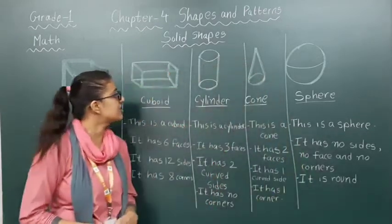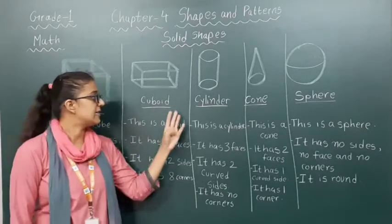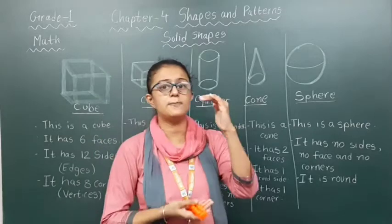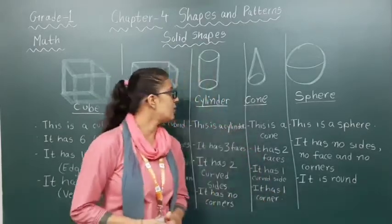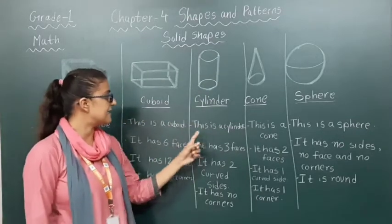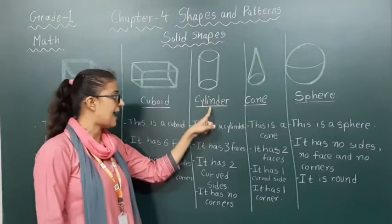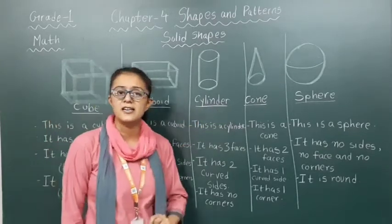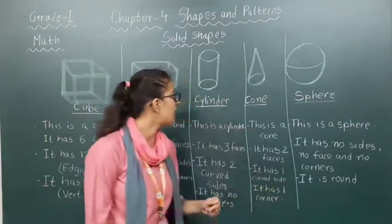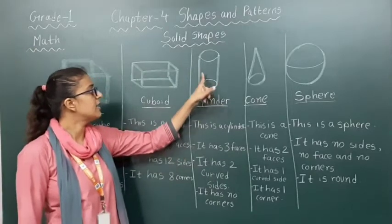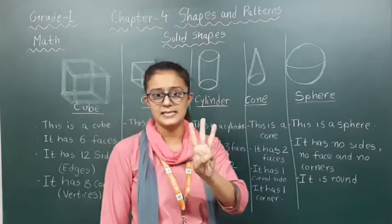Now let's move forward to the next shape, that is cylinder. You can take any bottle — it is the shape of a cylinder. This is a cylinder — C-Y-L-I-N-D-E-R. A cylinder has how many faces? Let's count: 1, 2 and 3. Cylinder has 3 faces.